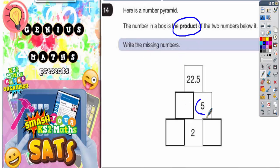So the number in this box is the product of the two numbers below it. So 2 times whatever this number is must make 5. A simple example would be to draw another few boxes. For example, if this was 3 and this was 4, this would have to be 12. The number 12 would be the product of 3 times 4. So 3 times 4 equals 12.